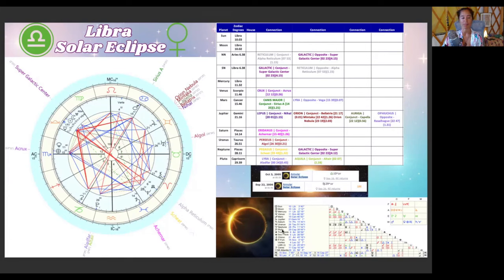This solar eclipse is also in this powerful grand square or cardinal grand cross energy. So with the sun, the moon, the south node, and Mercury, all in square to Ceres at 11 degrees 17 minutes of Capricorn. Ceres in Capricorn opposite Mars in Cancer. And both of them also squaring the lunar north node at six degrees 39 minutes of Aries.